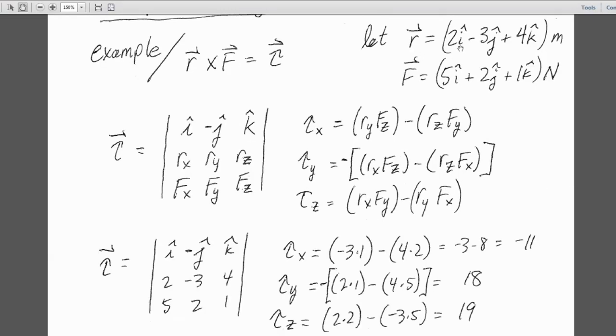Here we go. If our R vector is 2, negative 3, 4, and our force vector is 5, 2, 1, then here we go. Here's our R vector, 2, negative 3, 4. Here's our F vector, 5, 2, 1. And using our method that we just showed you up here,